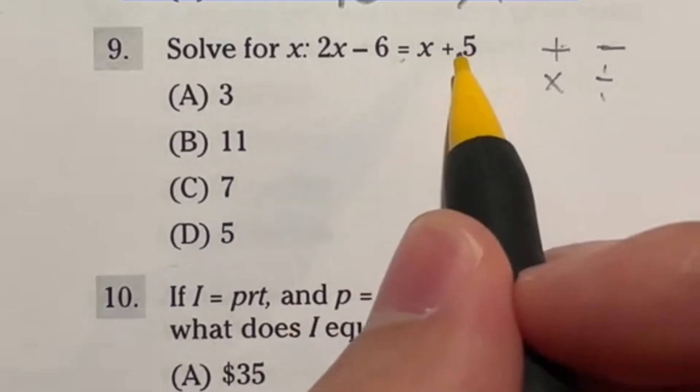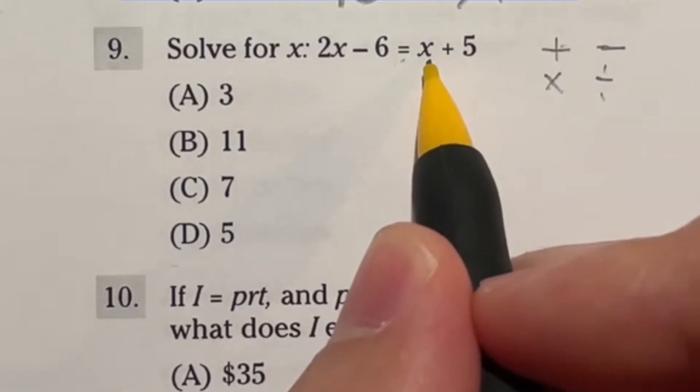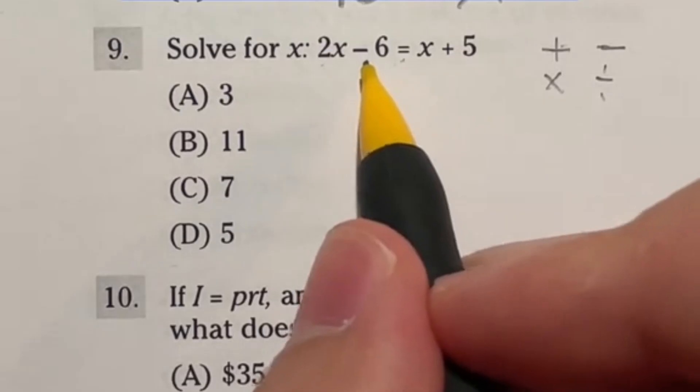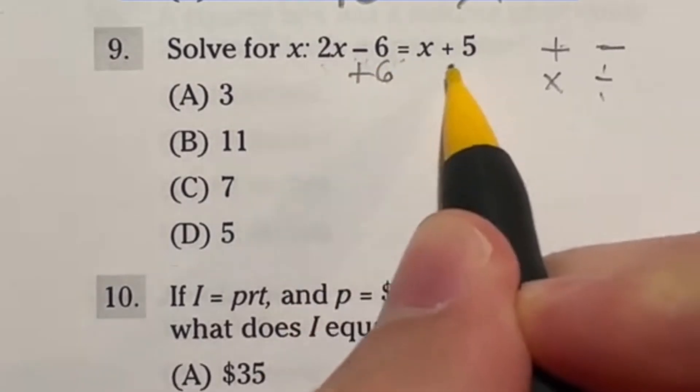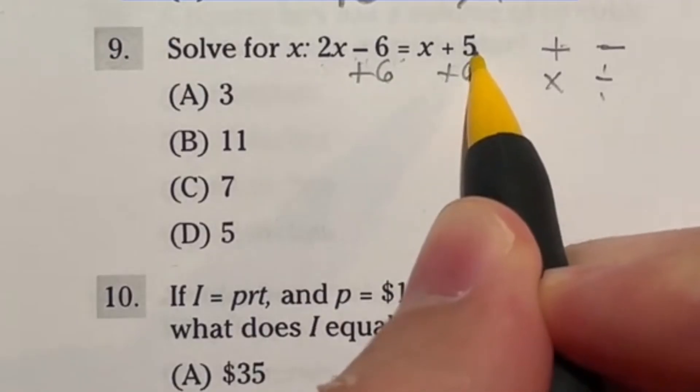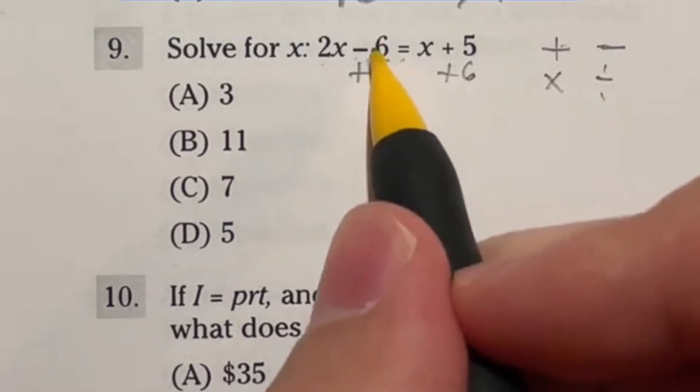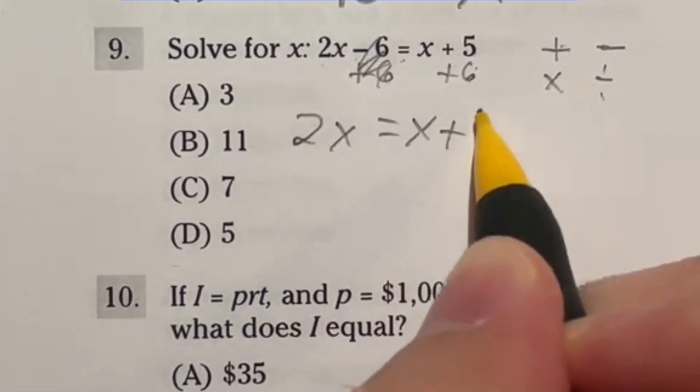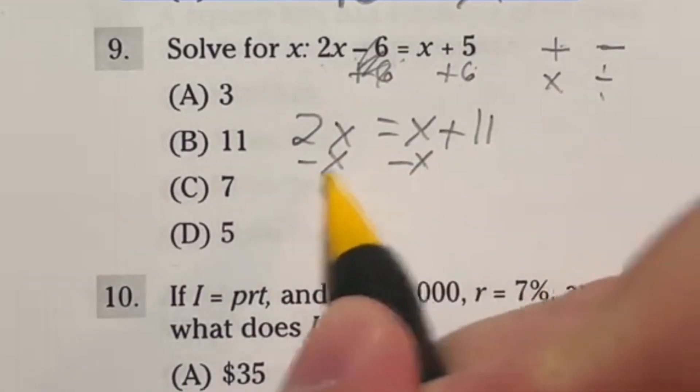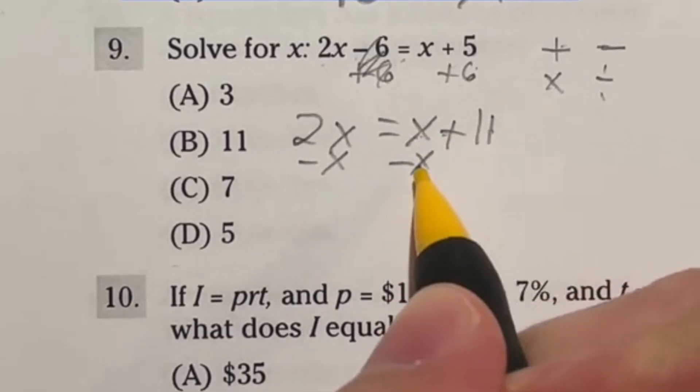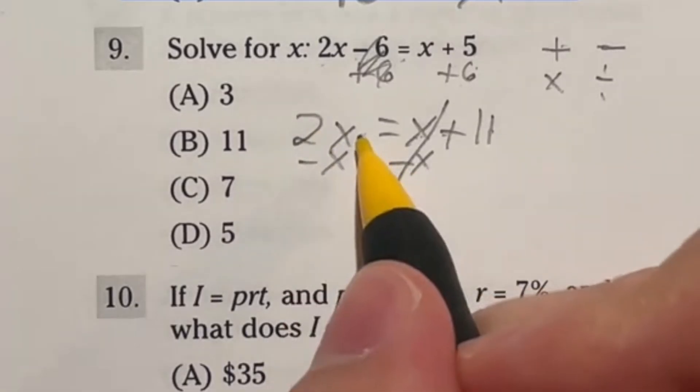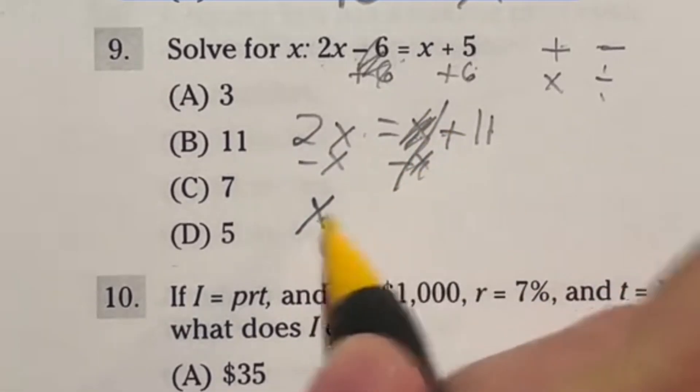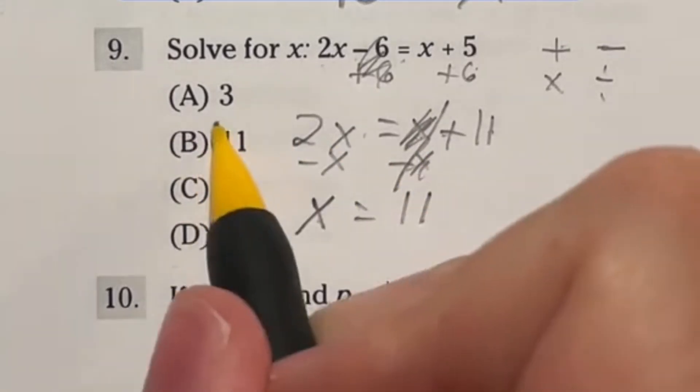The first thing I want to do is get x by itself. I see there's two x's over here and an x over here. That means I'm going to want to move this x over here and move this 6 over here. Since I'm subtracting, I'm going to add 6 to both sides. We're going to cancel out our 6s and be left with 2x equals x plus 11. Now I'm going to subtract x from each side. 2x minus 1x is going to leave me with 1x. We've canceled all the x's over here. We have x equals 11. So that's our final answer, and it looks like we're looking at B.